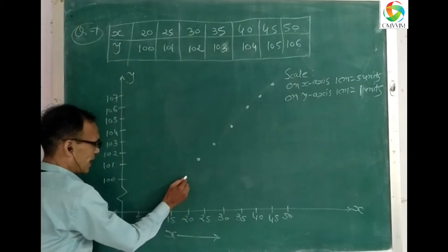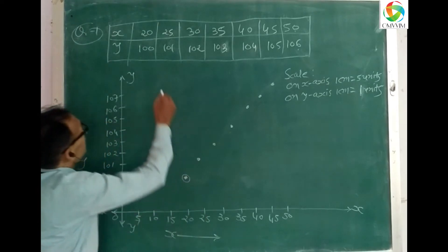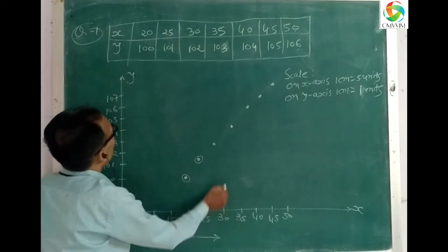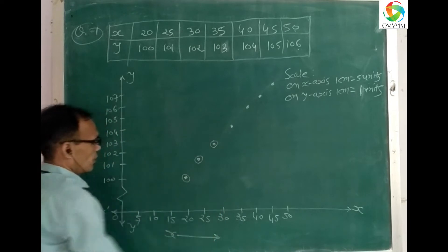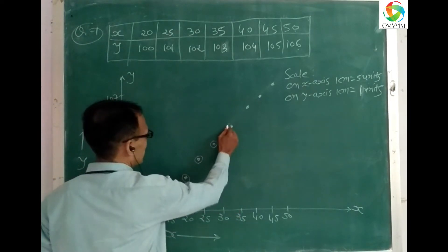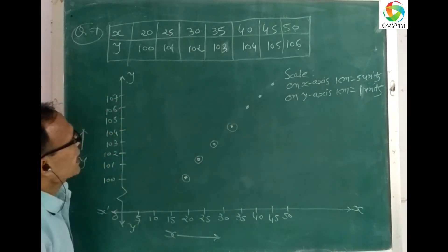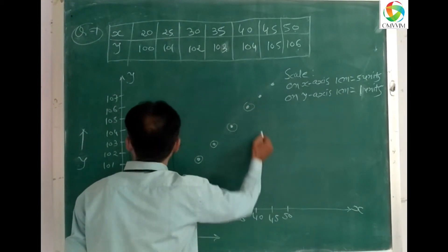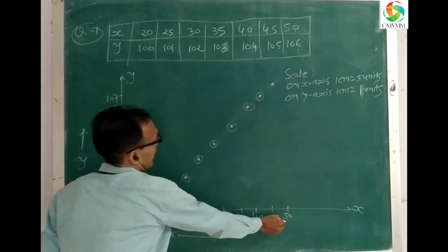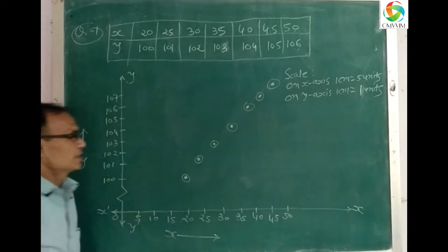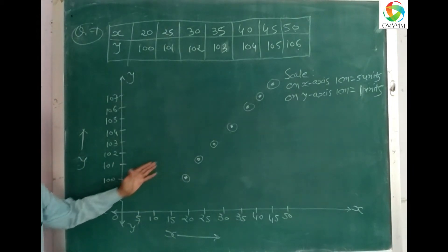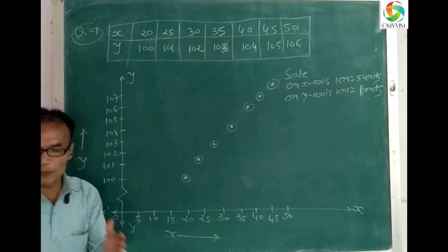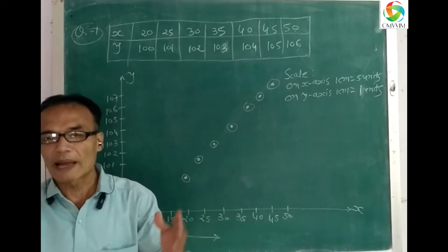When x = 20, y = 100, point is here. When x = 25, y = 101, point is here. When x = 30, y = 102, point is here. When x = 35, y = 103, point is here. When x = 40, y = 104, point is here. When x = 45, y = 105. When x = 50, y = 106.